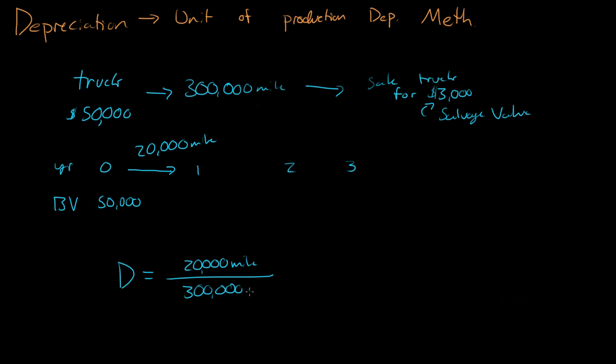So that's how much of the truck we used. Now we multiply it by the difference in how much we bought the truck and how much we can sell the truck for at the end of the depreciation. So we have the 50,000 minus the 3,000, and that will give us the price decrease in the truck for one year over those 20,000 miles.